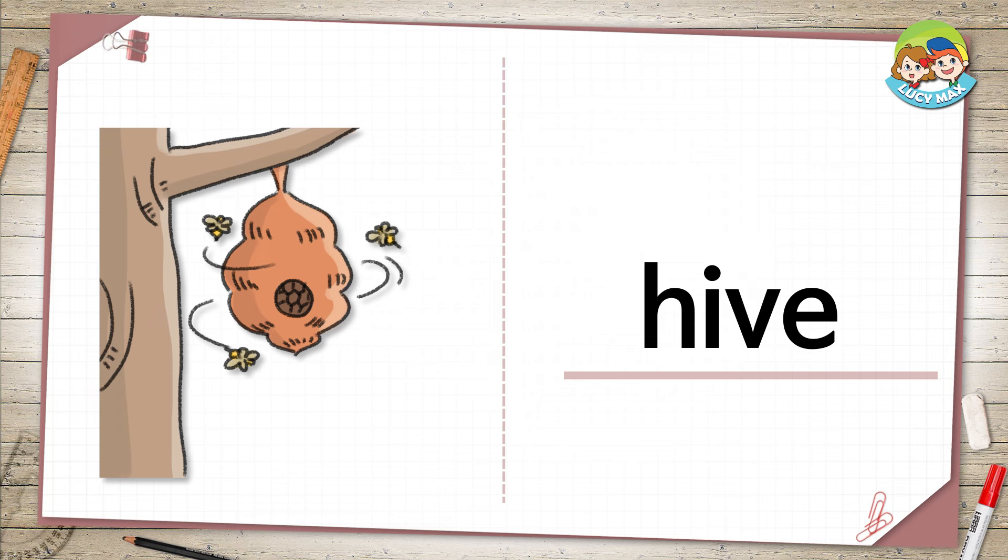Hive. The large thing on the tree is a hive. A hive is a bee's home. That's why some bees are flying near it.